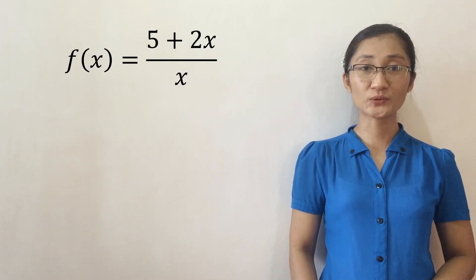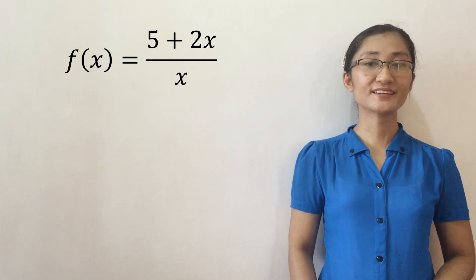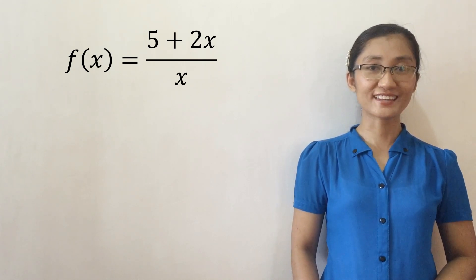Another example is f of x equals 5 plus 2x all over x. Since equation is the given, then let's proceed to representing it as a table of values of x and f of x.